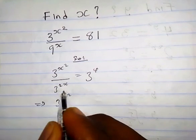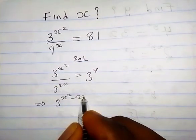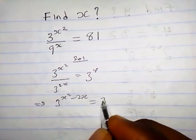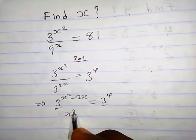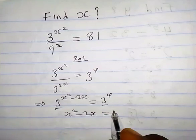So we have 3 raised to the power s squared. When this guy goes to the top it becomes negative. So we have minus 2s equals 3 raised to the power 4. The base is common here. So we have s squared minus 2s equals 4.